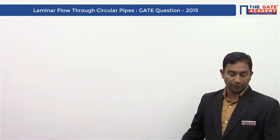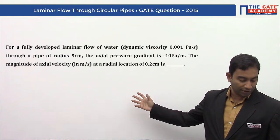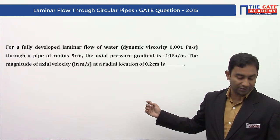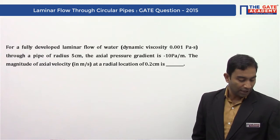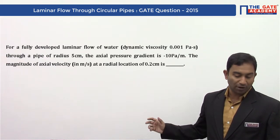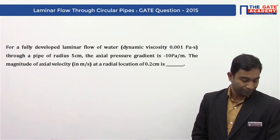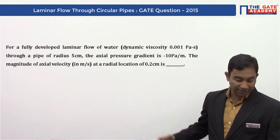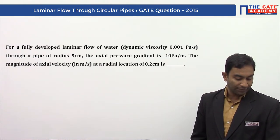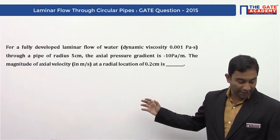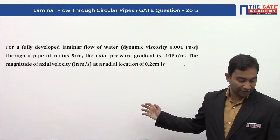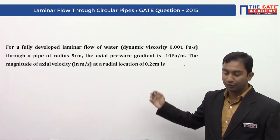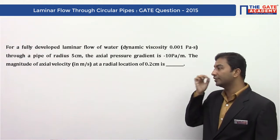For a fully developed laminar flow of water, dynamic viscosity 0.001 Pascal per second, through a pipe of radius 5 centimeter, the axial pressure gradient is minus 10 Pascal per meter. The magnitude of axial velocity in meter per second at a radial location of 0.2 centimeter is?